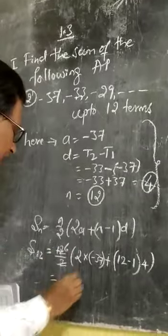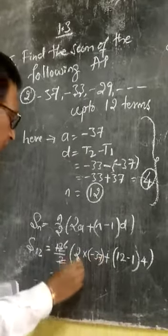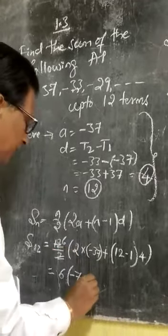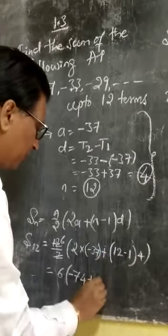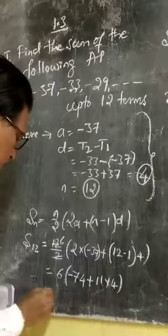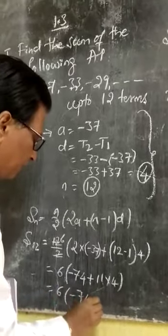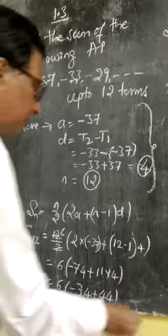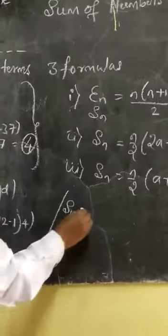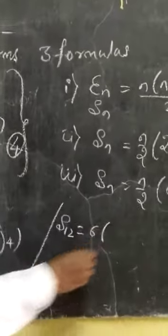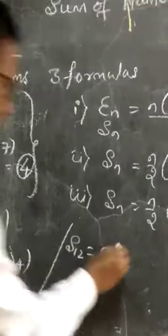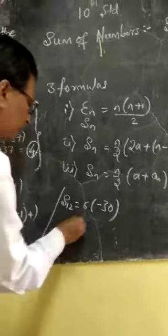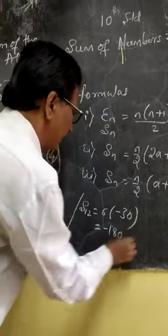So, simplify. 2 into 1 is 2, 6 into bracket. 2 into 37 is how much? 37 times 2 is 74. That 2 minus 74 plus 12 minus 1 means 11. 11 into 4, 11 into 4. So, this is here 44. So 44 from the 74. So the S12 becomes here 6 into bracket minus 30. Because 74 minus 44 gets here 30. Minus 30, 6 into 3 is 18, that is 180. So, minus 180 is the answer.